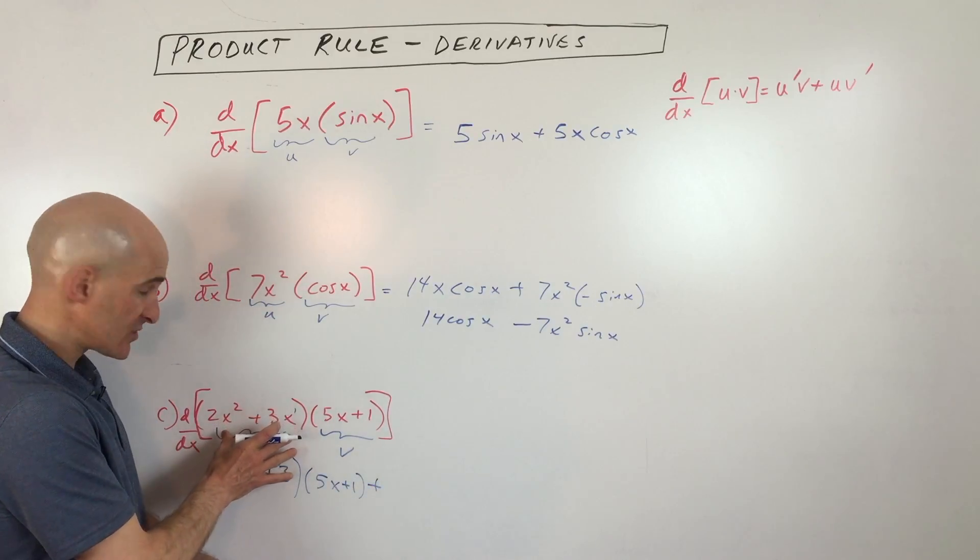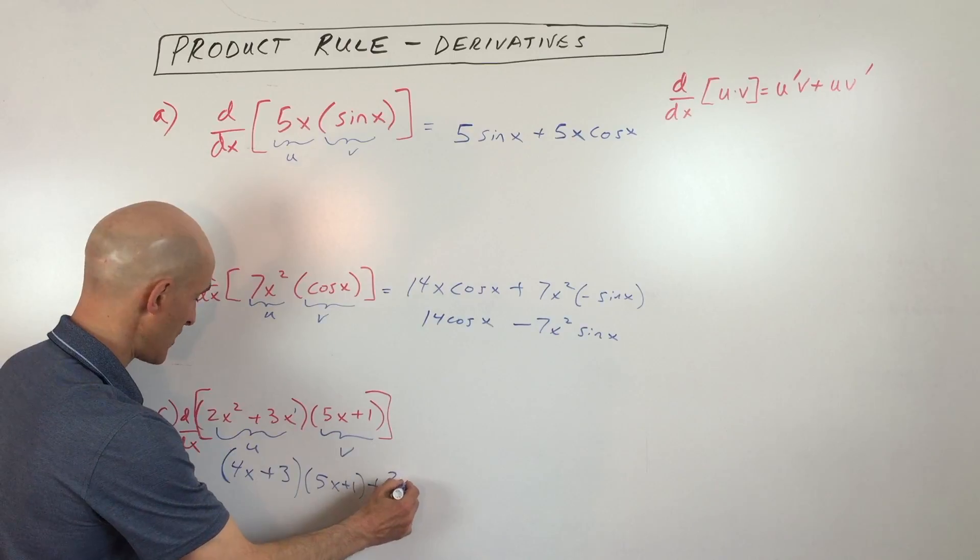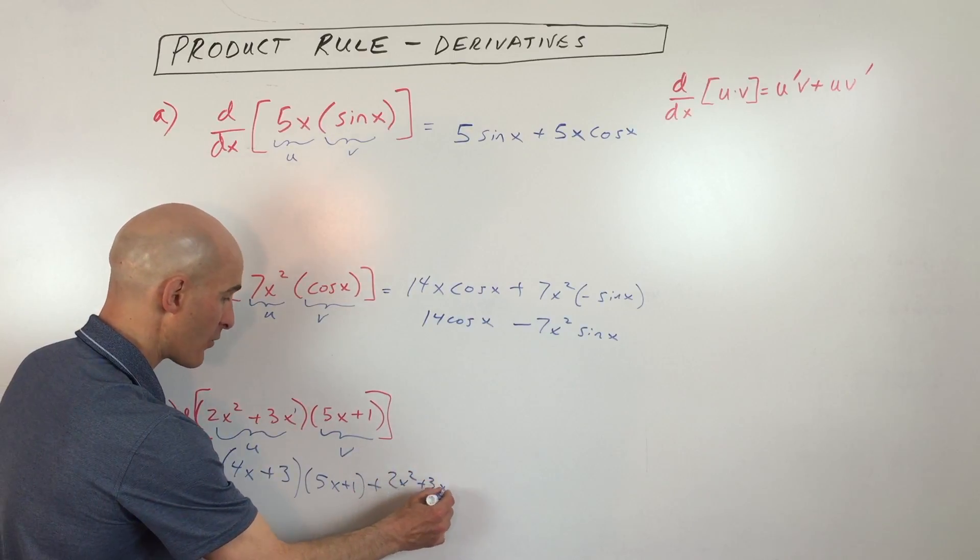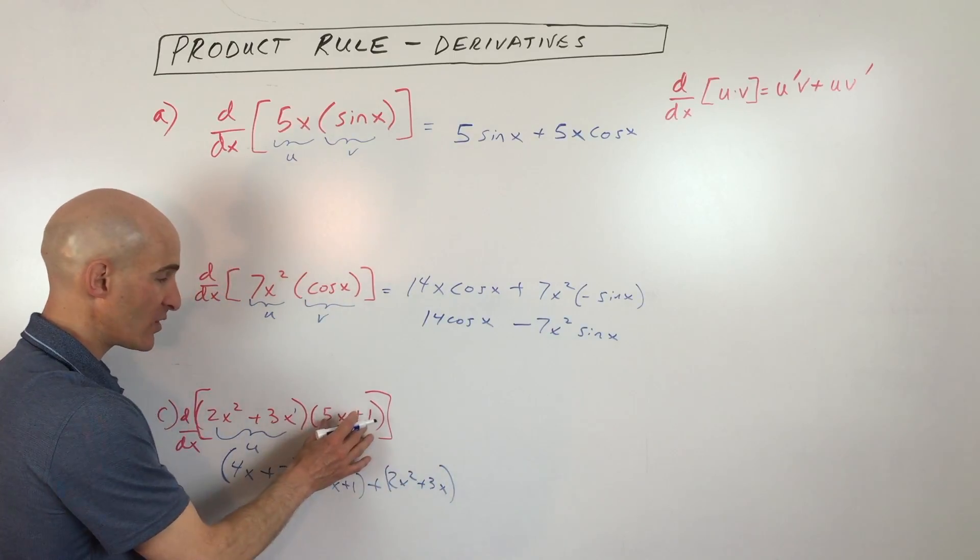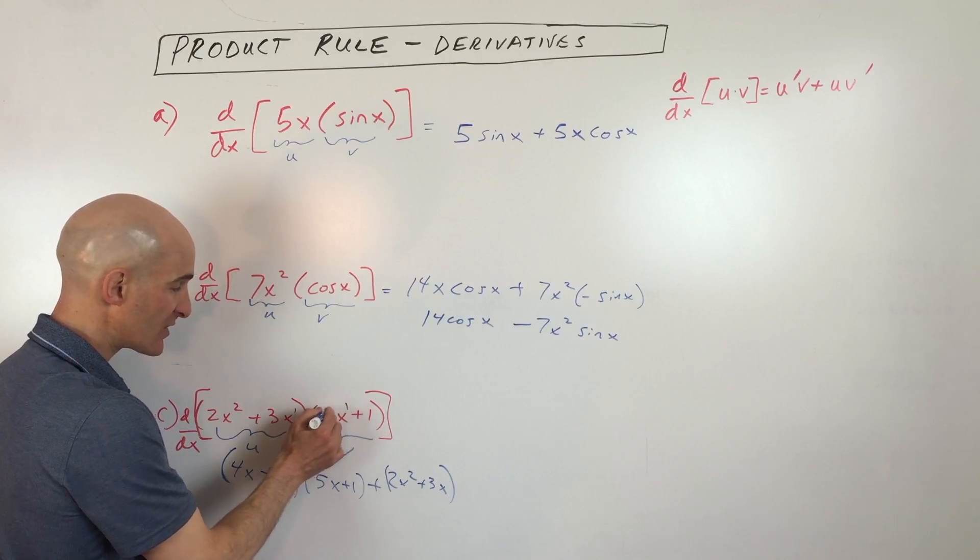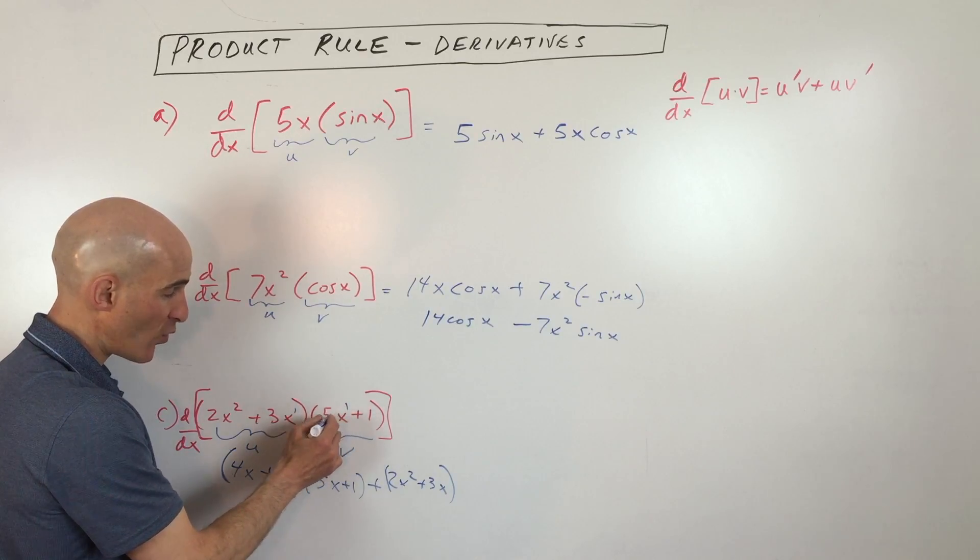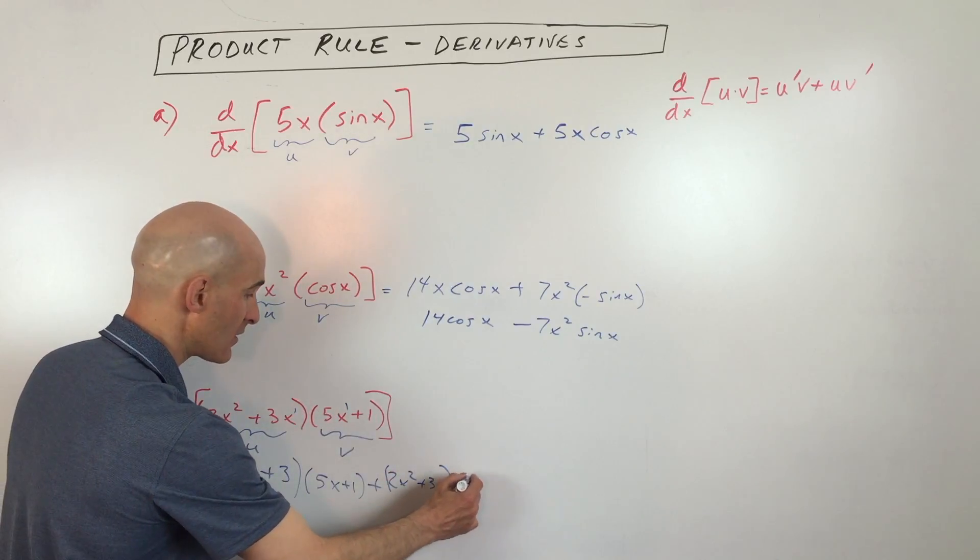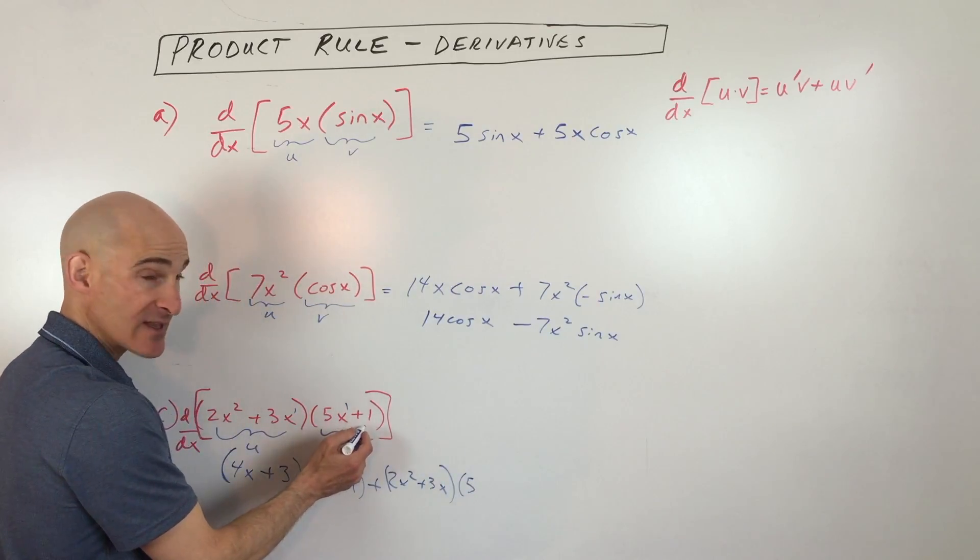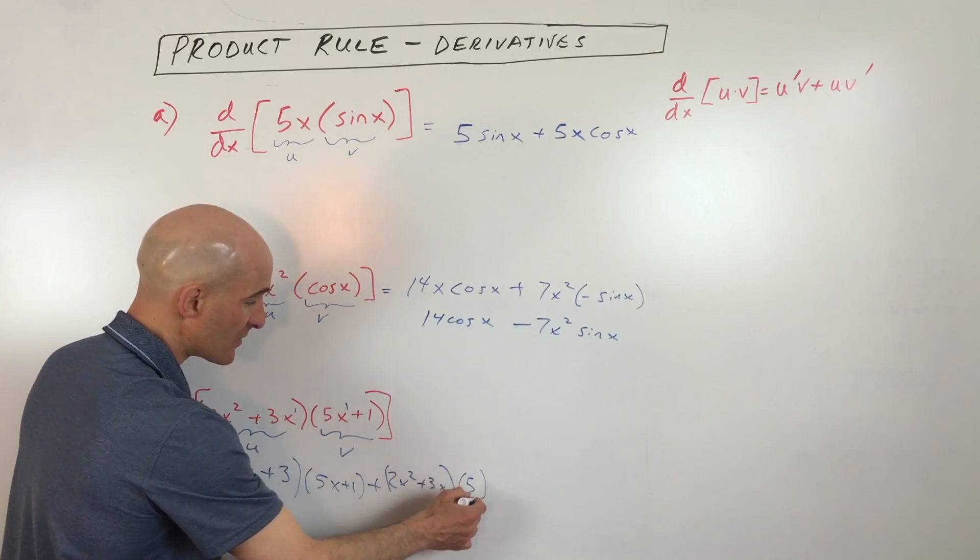Now we're going to reverse it, we're going to leave the first quantity alone, which is the 2x squared plus 3x, and we're going to take the derivative of the second quantity, which is derivative of 5x, we bring down the 1, that's 5, we subtract 1 from the exponent, that's 0, anything to the 0 is 1, so that's just going to become 5, and then the derivative of a constant of 1 is just 0, so this just becomes 5.